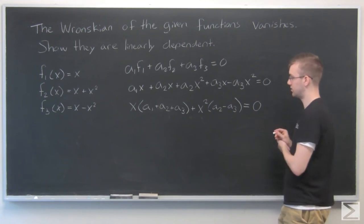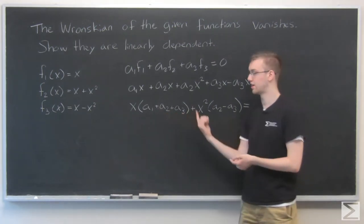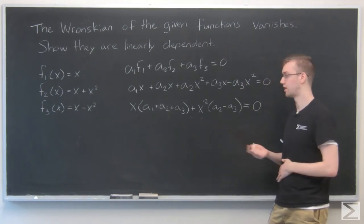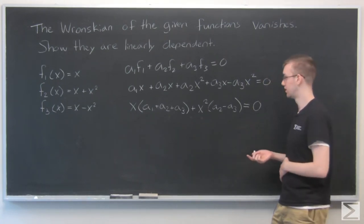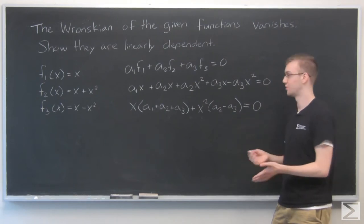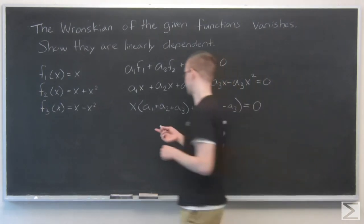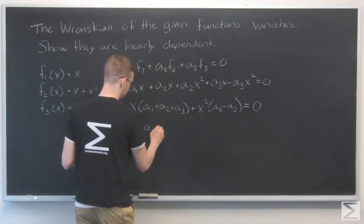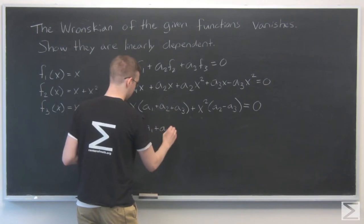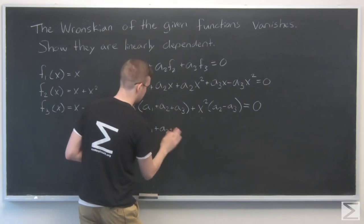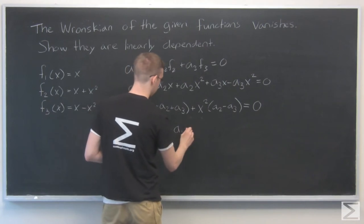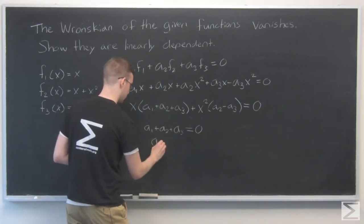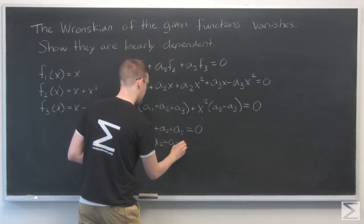Now I have an x and an x² term with constants in front of both. I need both of these constants to equal zero without a1, a2, and a3 all being zero. So I'll write two equations: a1 + a2 + a3 = 0, and a2 - a3 = 0.